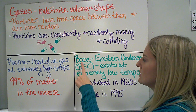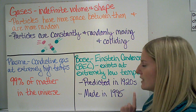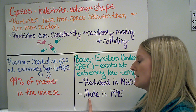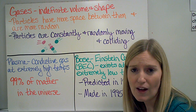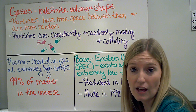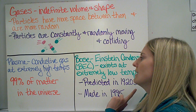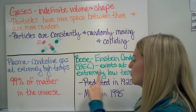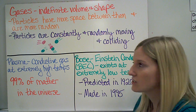Bose-Einstein condensates were predicted in the 1920s and they were finally made in a laboratory in 1995, which wasn't that long ago. Bose-Einstein condensates only exist at extremely low temperatures.